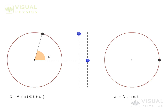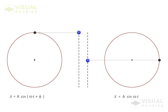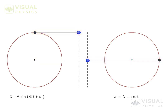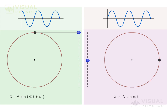For a phase difference of π/2, the situation is as shown. If one SHM starts from the mean position, then the other SHM, which is ahead by a phase of π/2, will start from the extreme position. That is, if this SHM follows the sine function, then the other will follow a cosine function. This is evident if we write Φ equal to π/2 in this equation, because this term will be equal to cos(ωt).